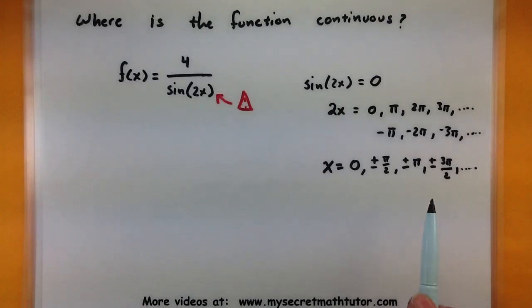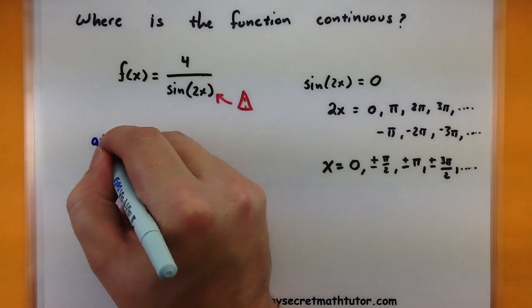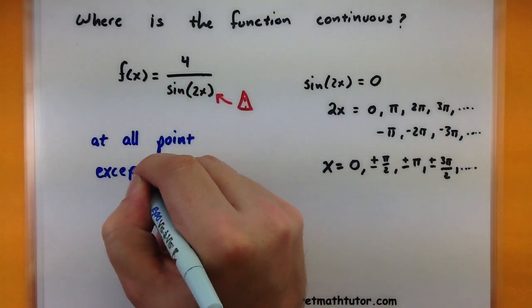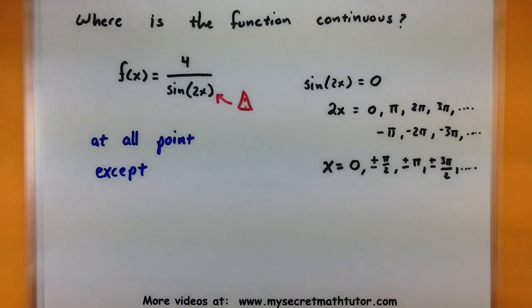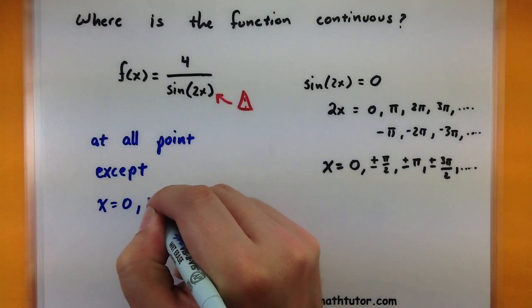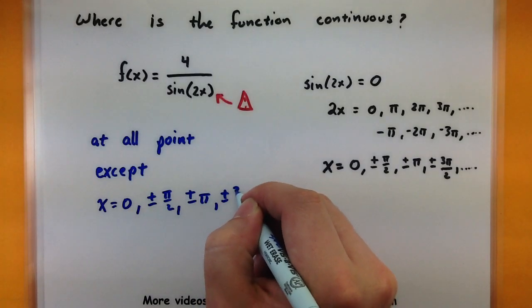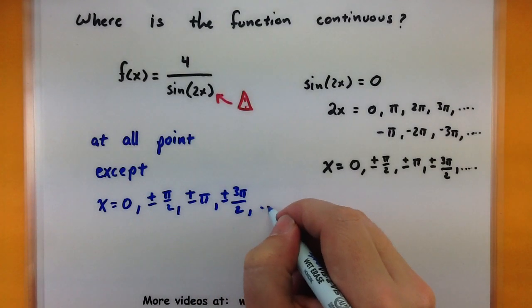So at each one of these points if I were to try and plug them into the original I'd get a zero on the bottom and my function would not exist there. So I know that it is not continuous at every single one of these points. That's a lot of them. Well I don't see any other fractions or anything else that will give me a problem or any place where the limit does not exist. So here's what we'll say. This is continuous at all points except when x equals zero, plus minus pi over two, plus minus pi, plus minus three pi over two, all the way down the line.